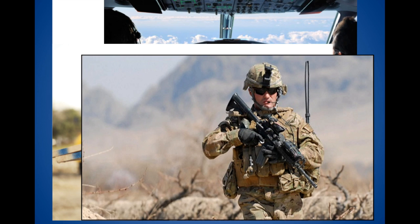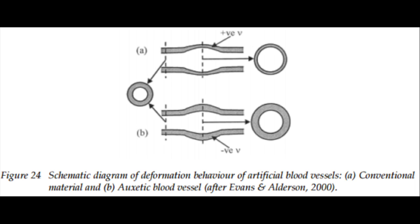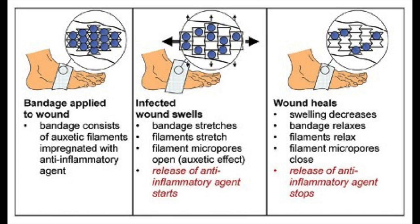In the biomedical field, devices such as artificial blood vessels are being tested. During a pulse of blood, the walls of the vessel will increase in thickness rather than decrease, which will greatly reduce the probability of rupture. Medical bandages that react to the swelling of a wound in order to produce a controlled release of an antibacterial agent are another possibility.